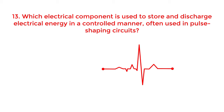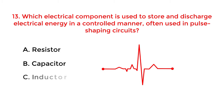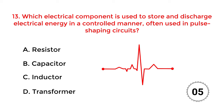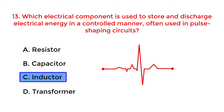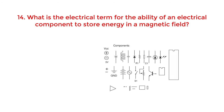Which electrical component is used to store and discharge electrical energy in a controlled manner, often used in pulse shaping circuits? A. Resistor. B. Capacitor. C. Inductor. D. Transformer. The correct answer is option C: Inductor.